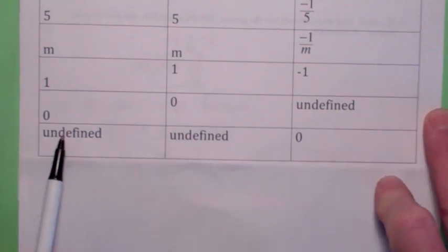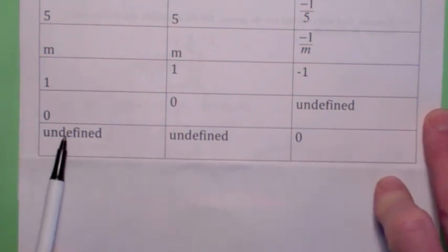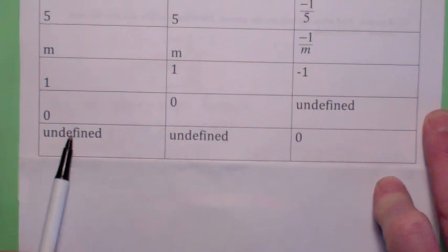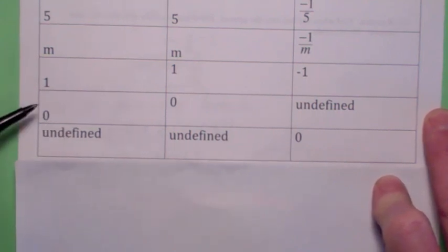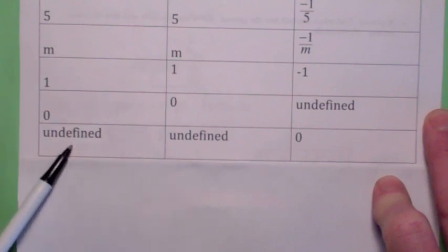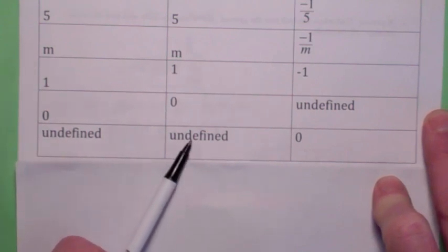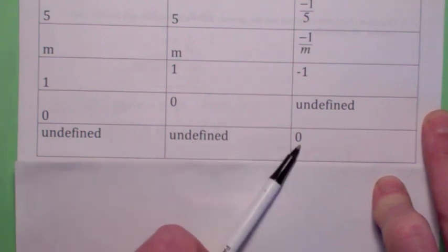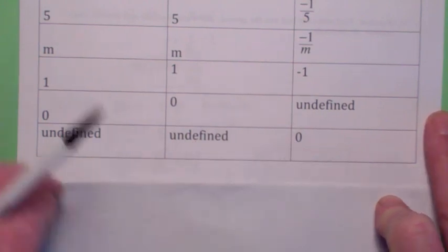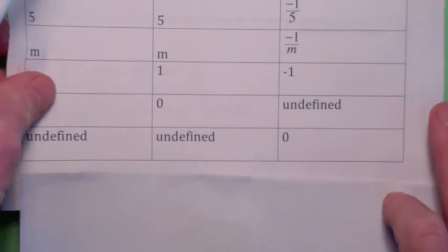What if a line has undefined slope? That would be a vertical line, with equation x equals something. A horizontal line has the equation y equals something. Any line parallel to a vertical line will also be vertical with undefined slope. And the line perpendicular to a vertical line would be a horizontal line with slope 0.